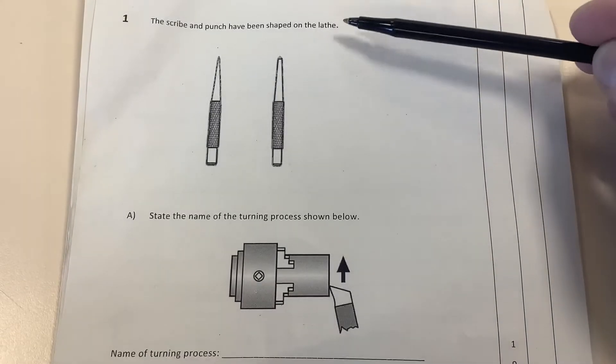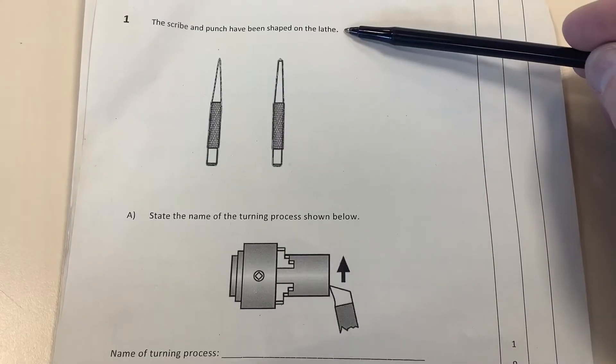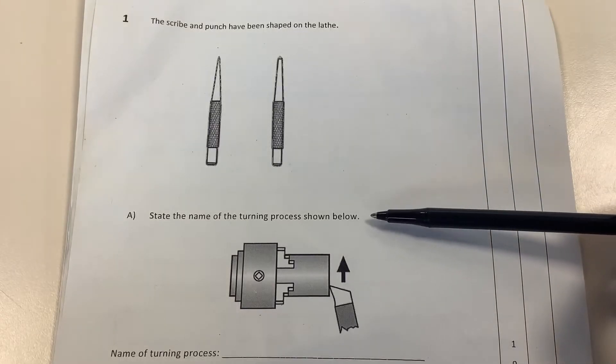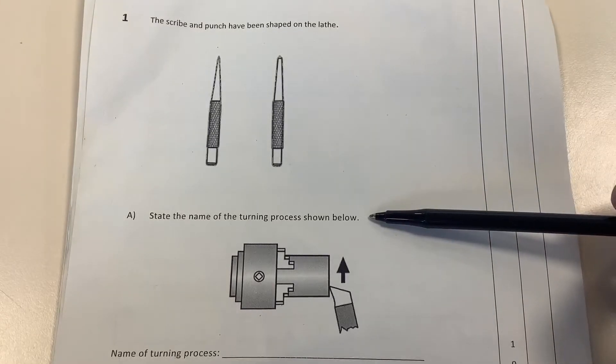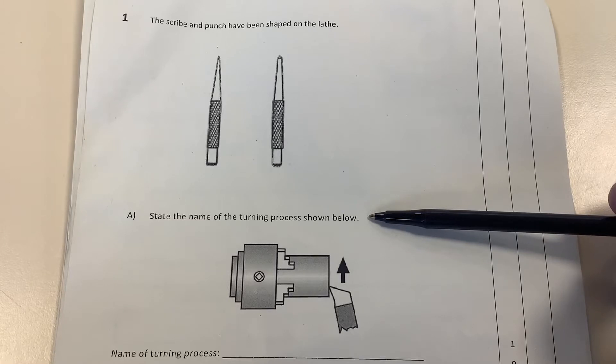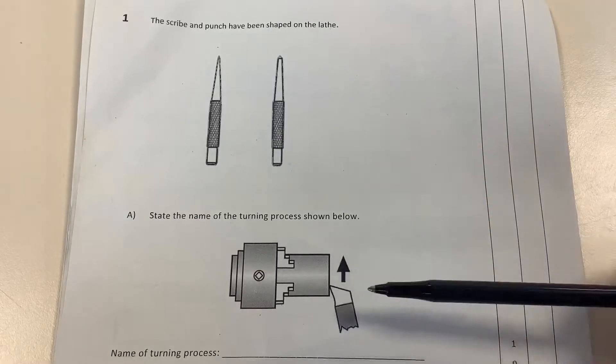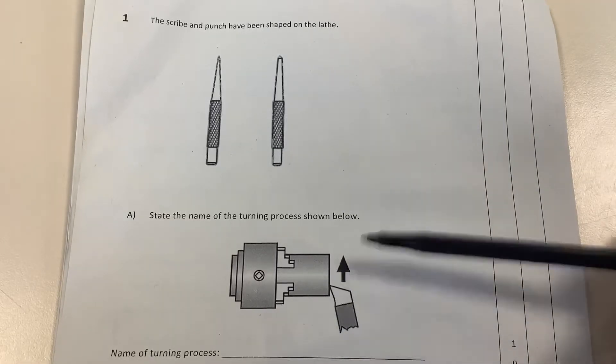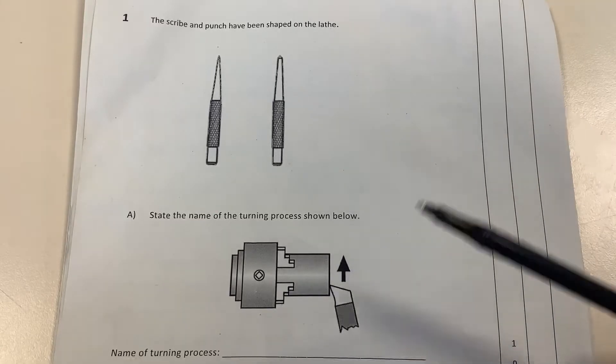On your previous paper, you can see the first question describing the punch that's been shaped using the lathe. The process here is asking you to state the name of the turning process, so basically it's just a quick description of what it is or even just a name of the process.